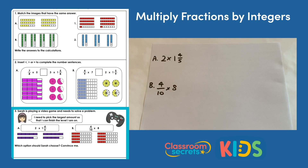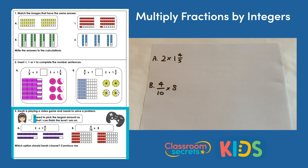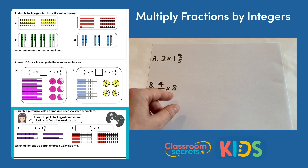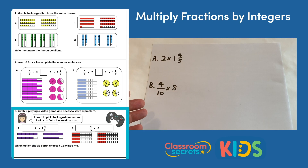Question three says Sarah is playing a video game and needs to solve a problem. Sarah says she needs to pick the largest amount so she can finish the level. We have option a — two multiplied by one and four fifths — and option b — four tenths multiplied by eight. Working out these multiplications will show which is largest.